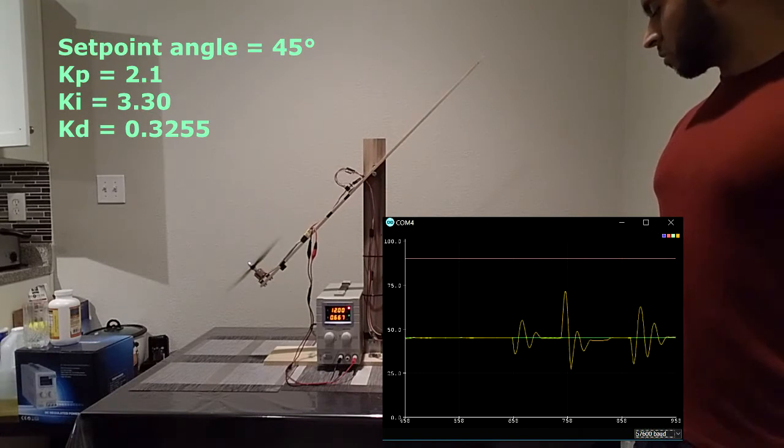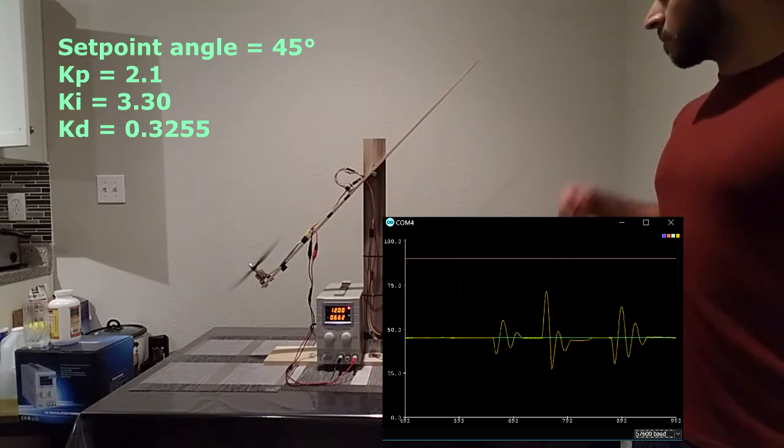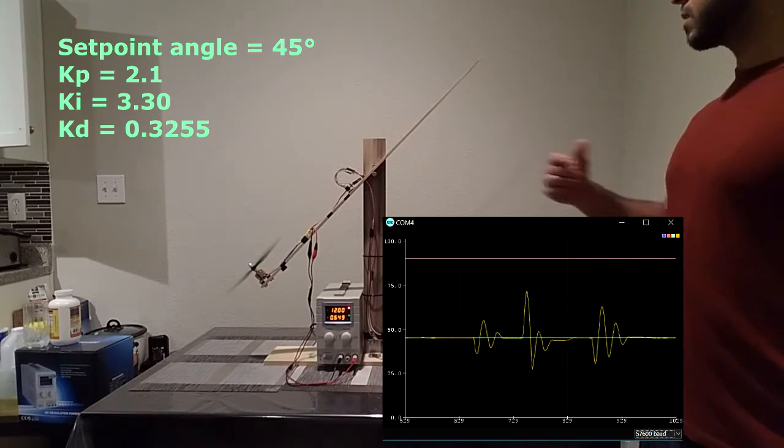Now as you can see, the system performs pretty well, but we can reduce the overshoots by turning up the derivative gain.